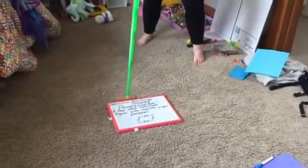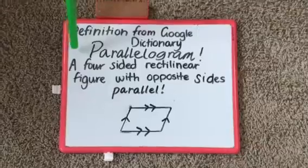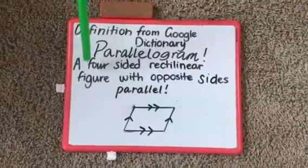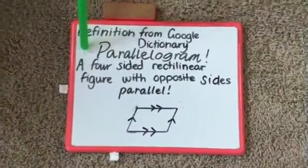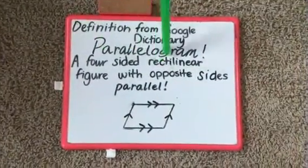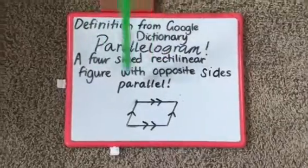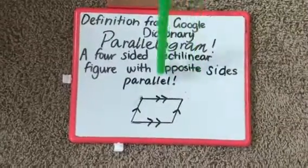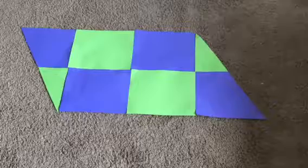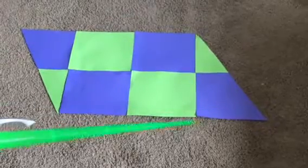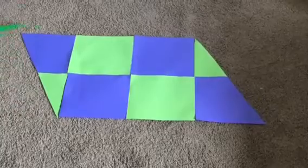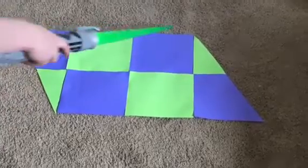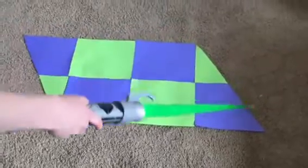Parallelogram! The definition of a parallelogram is a four-sided rectilinear figure with opposite sides parallel. To find the area of a parallelogram, it's base times height. And we'll show you why this is.